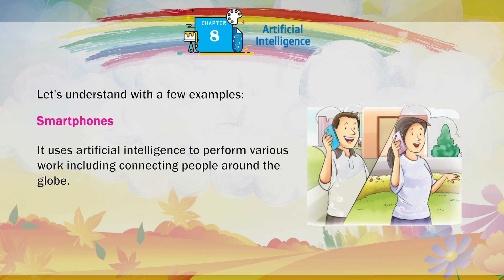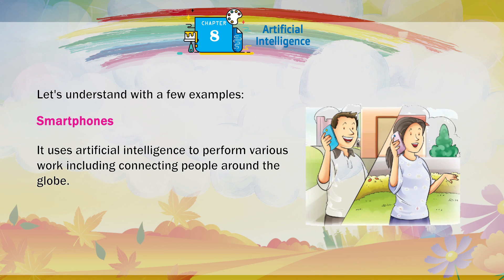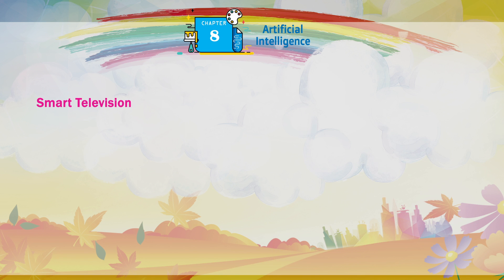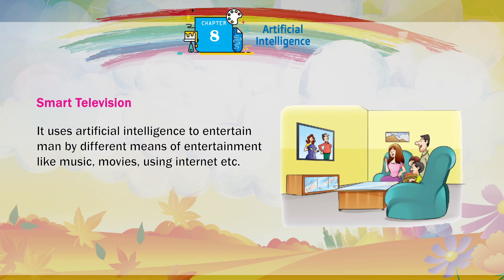Smartphones use artificial intelligence to perform various work, including connecting people around the globe. Smart Television uses artificial intelligence to entertain man by different means of entertainment, like music, movies, using internet, etc.